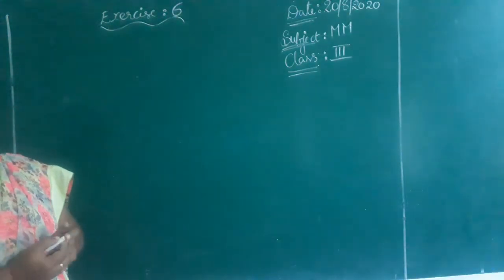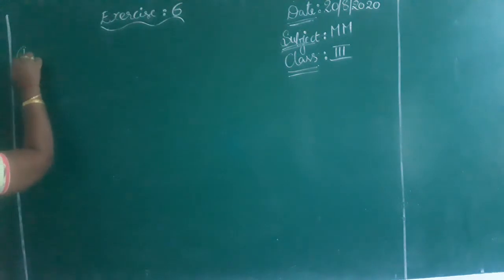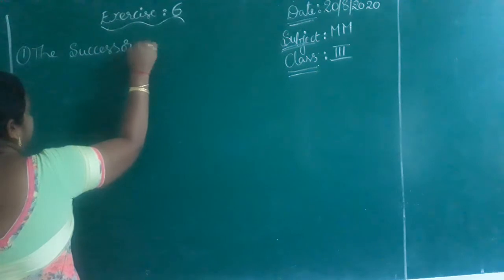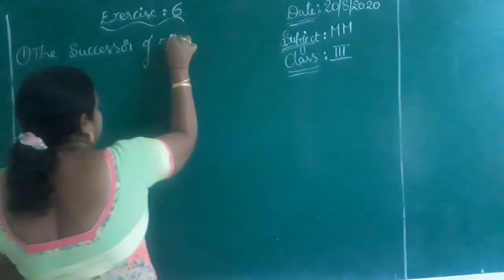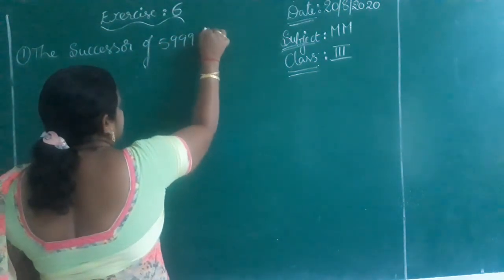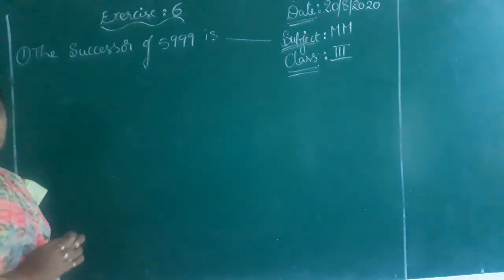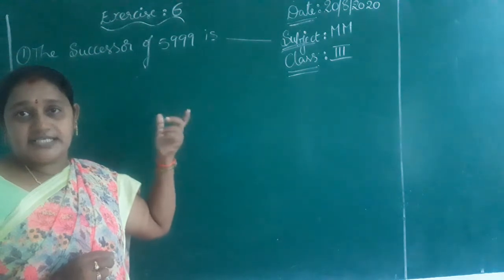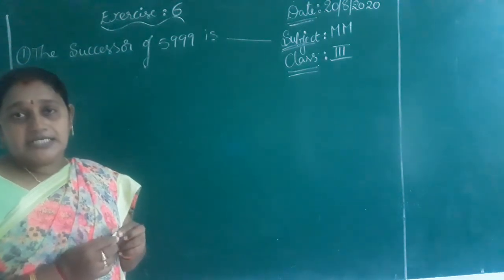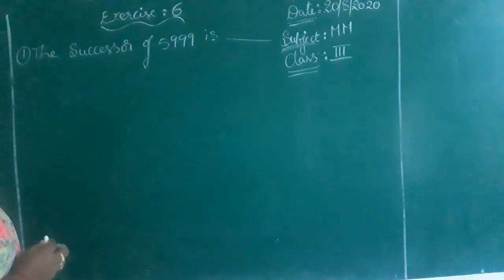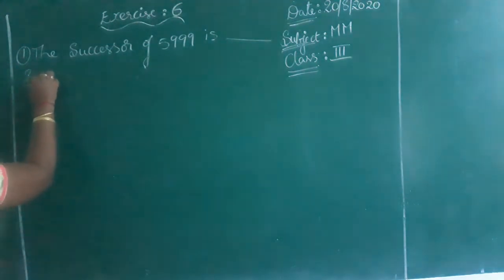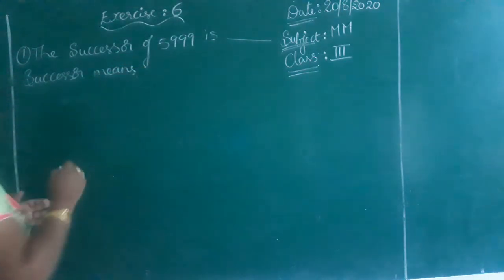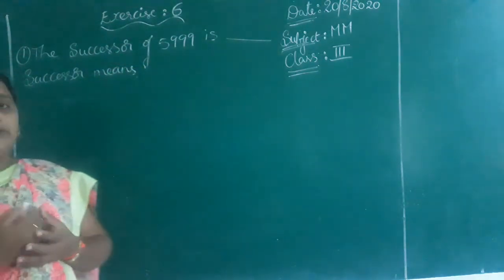First one: the successor of 5999. What is the successor of that number? Children, if you observe, what is meant by successor? Successor means the number which comes after the given number.